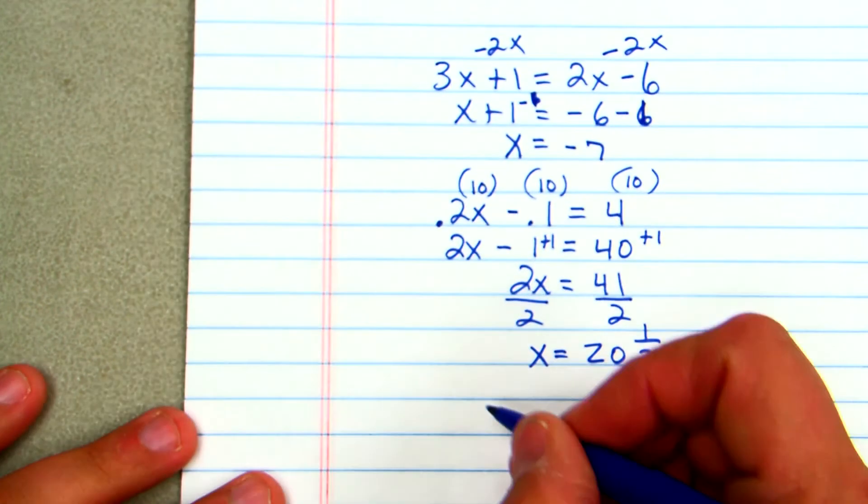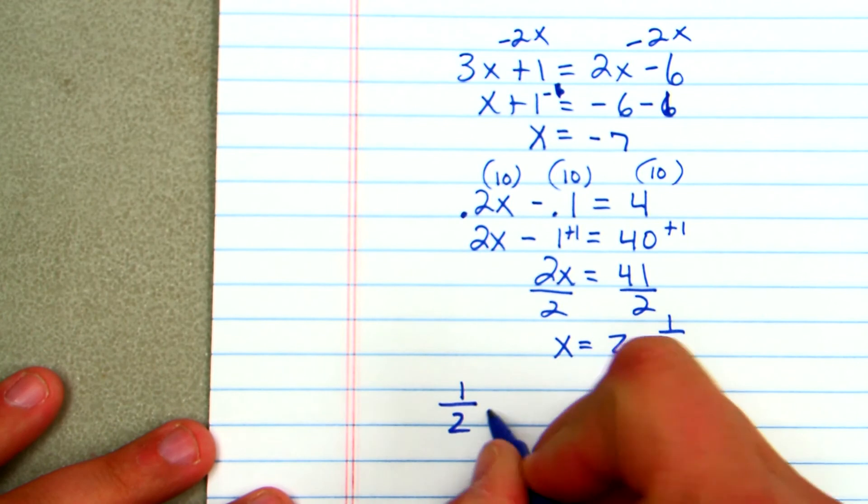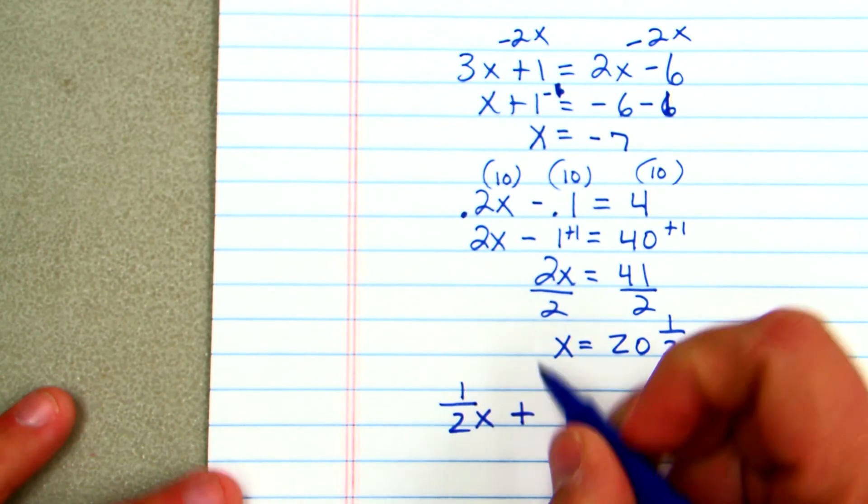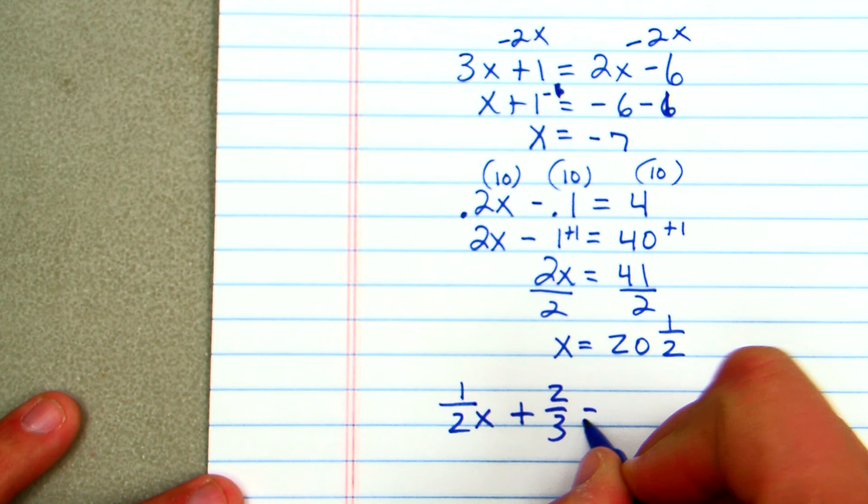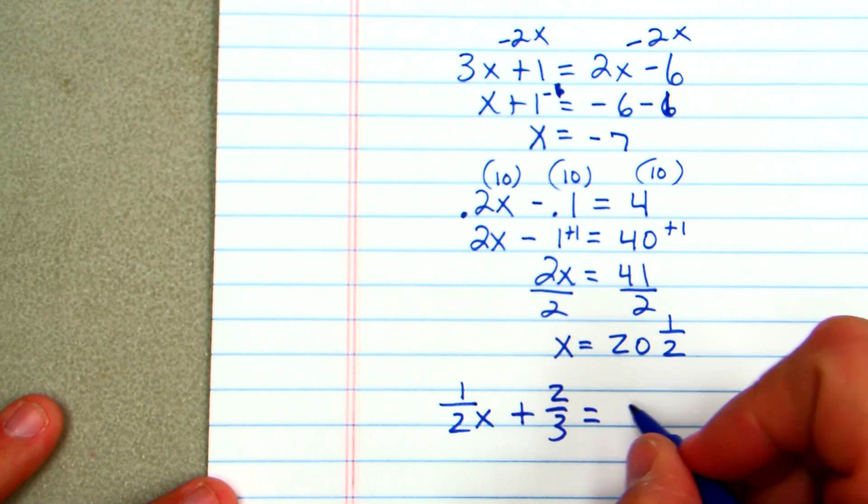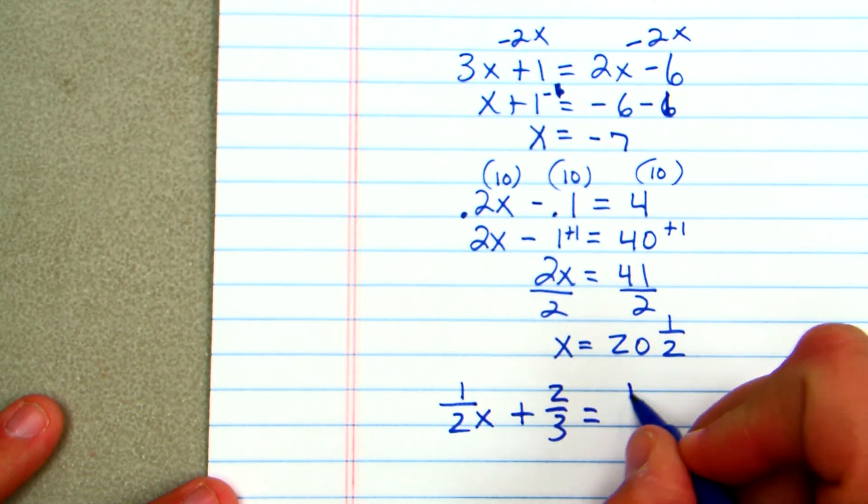Now, if we have a fraction problem, and I have something like 1 half x plus 2 thirds is equal to, let's say, 1 third.